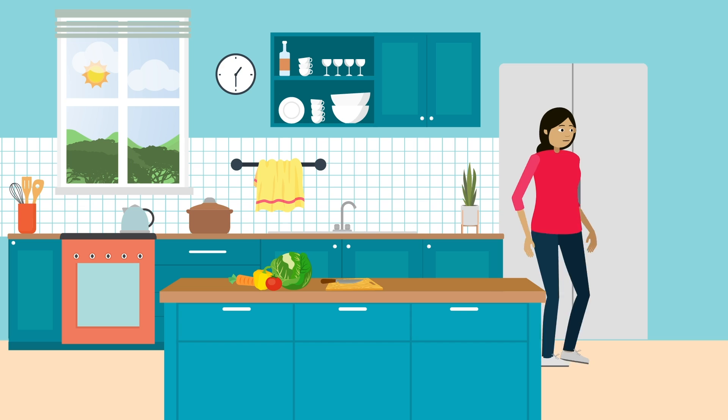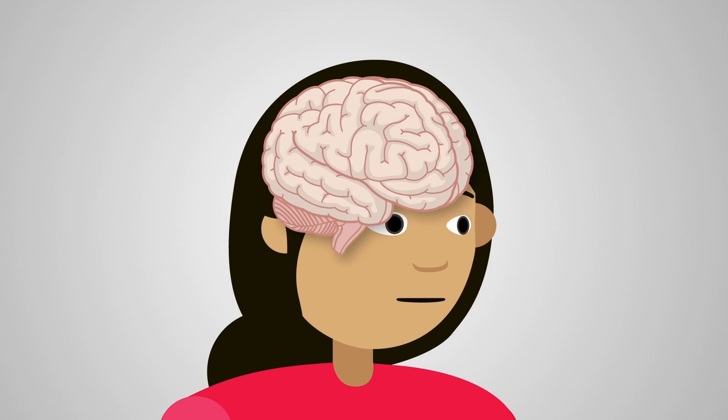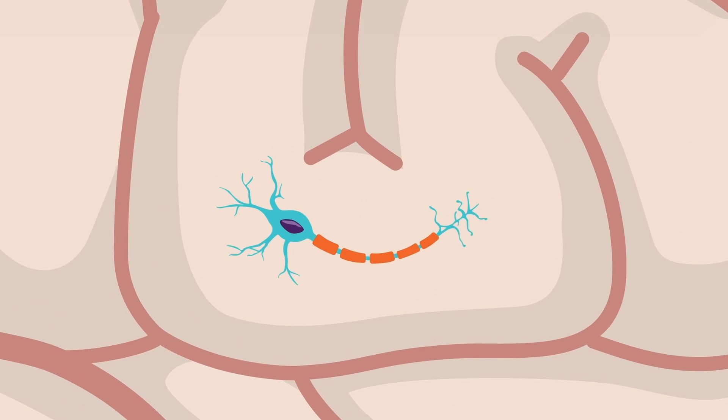Even the simplest of choices requires a huge amount of brain power. The human brain contains millions of functional units, or neurons.